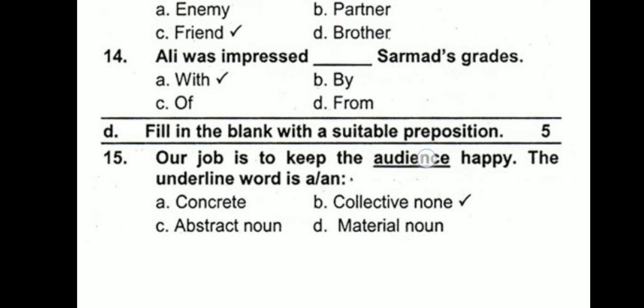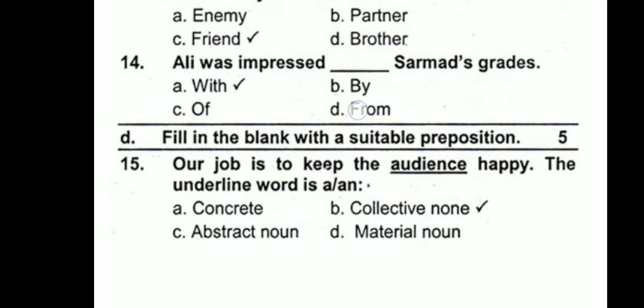Question 15: 'Our job is to keep the audience happy.' The underlined word is 'audience,' which is a collective noun. A collective noun is a name for a group of persons, places, or things. For example, team, class, audience, and police are all collective nouns. They include a group of persons, places, or things. So 'audience' is a collective noun.